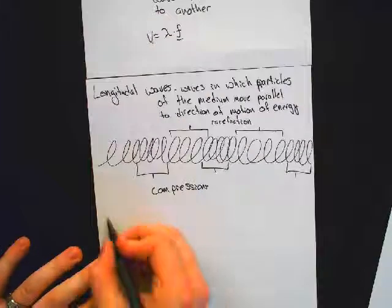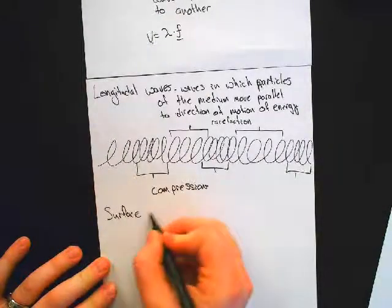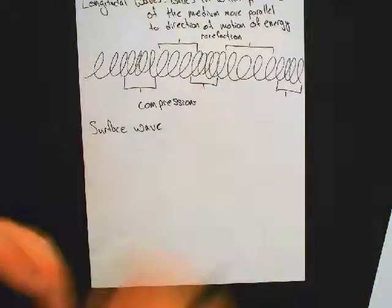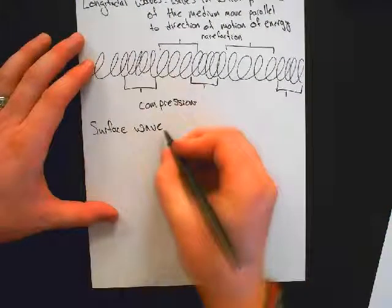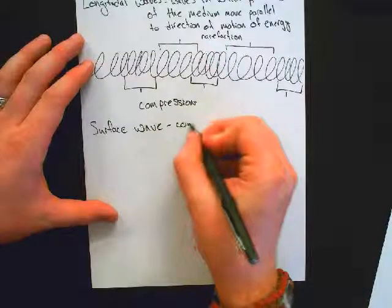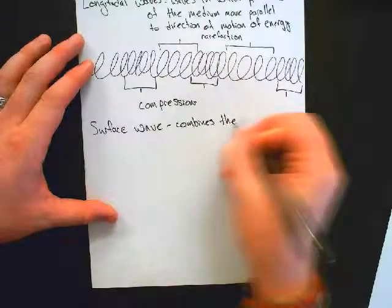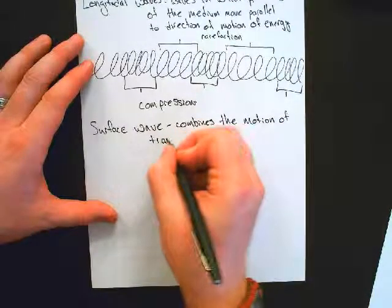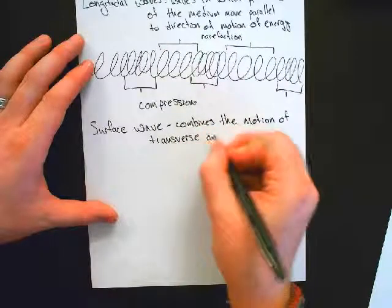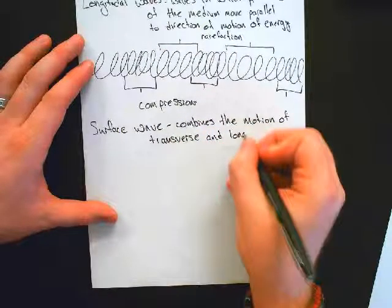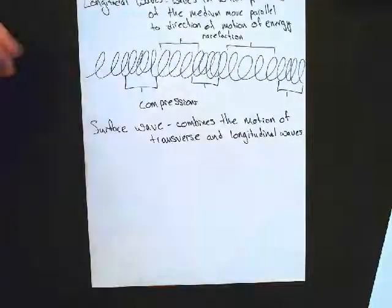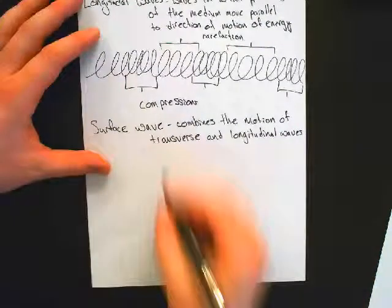Jell-O is actually the next one. Jell-O is going to get what we call a surface wave. A surface wave combines the motion of a transverse and longitudinal wave to produce a more ovular motion of wave particles. Combines the motion of transverse and longitudinal waves to create a more ovular motion.